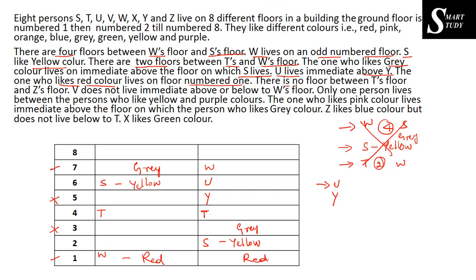The next information is that there is no floor between T's floor and Z's floor — meaning there is no gap, so T and Z are immediate neighbors. Therefore Z can be either immediately above or below T. In the case where Y is already placed next to T, Z has only one position available, making T and Z immediate neighbors. We are not yet sure whether Z is above or below T.